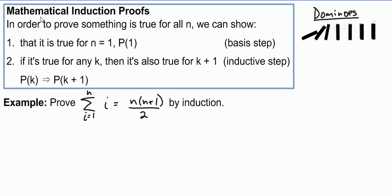In this video, we're going to take a look at mathematical induction proofs. Induction proofs are used to prove something is true for all n. We basically do this by showing it's true in the base case for n equals 1, and then we show that if we jump anywhere along the way up to an arbitrary spot k, if it works for k, then it's got to work for k plus 1. If both of these two things are true, then since it worked for 1, it must work for 2, and since it worked for 2, it must work for 3, and since it worked for 3, it must work for 4, and so on.